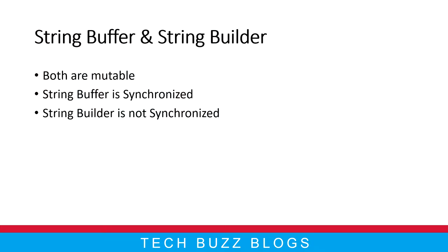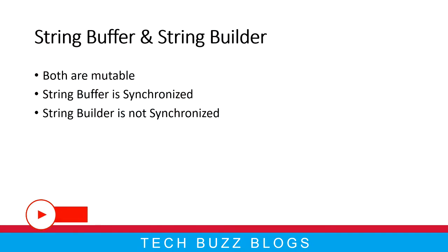String is immutable — once you create a String you cannot change it. If you overwrite it, it will create a new object in the String Constant Pool. But with StringBuffer, it will remove the old one and create a new one in the heap memory. So when you keep on changing the String value, you can use StringBuffer and StringBuilder. That is why both are called mutable.